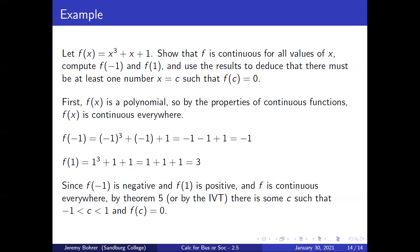For example, let f(x) = x³ + x + 1. Show that f is continuous for all values of x, compute f(−1) and f(1), and use the results to deduce that there must be at least one number x = c such that f(c) = 0. First, f(x) is a polynomial so by the properties of continuous functions, f(x) is continuous everywhere. f(−1) = (−1)³ + (−1) + 1 = −1 − 1 + 1 = −1. f(1) = 1³ + 1 + 1 = 1 + 1 + 1 = 3. Since f(−1) is negative and f(1) is positive, and f is continuous everywhere, by Theorem 5 (the Intermediate Value Theorem) there is some c with −1 < c < 1 such that f(c) = 0.